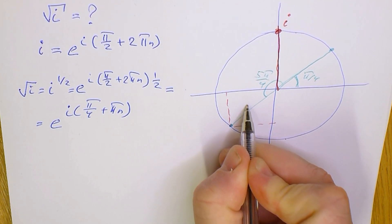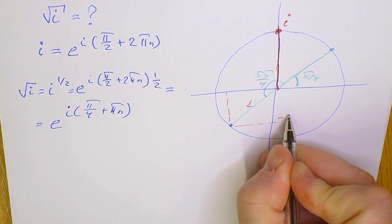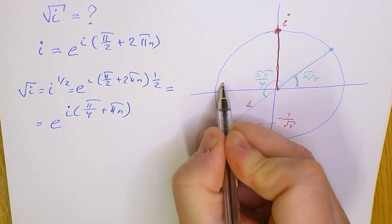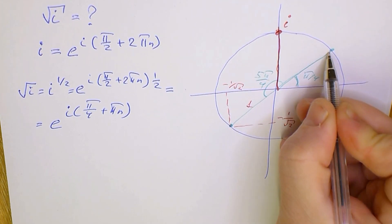We know that the length of this vector is 1. Therefore, this point will be minus 1 divided by square root of 2 and minus 1 divided by square root of 2.